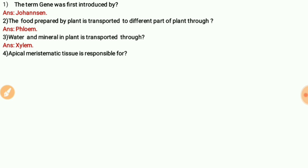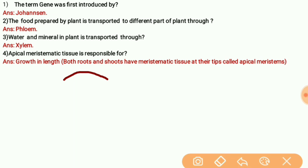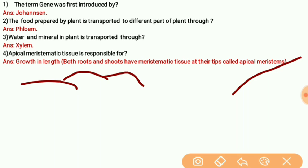Apical meristematic tissue is responsible for growth in length. Both roots and shoots of plants have meristematic tissue at their tips, called apical meristems. This tissue helps in the growth in length of the plant.